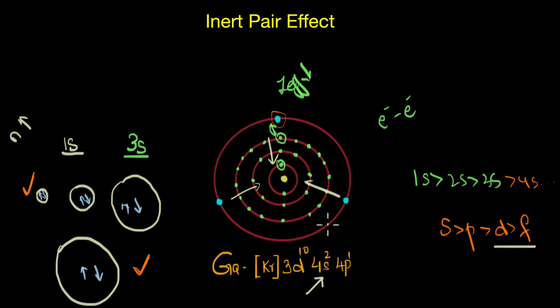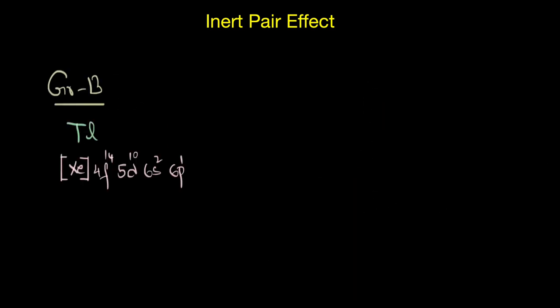Now the inert pair effect becomes increasingly significant as we go down the group. That means in group 13, inert pair effect would have maximum impact on thallium. While both the s and p electrons get drawn closer towards the nucleus, it affects the s electrons more than the p electron.